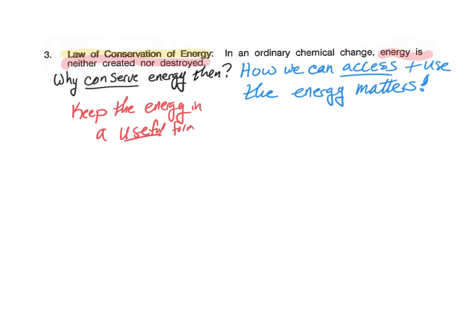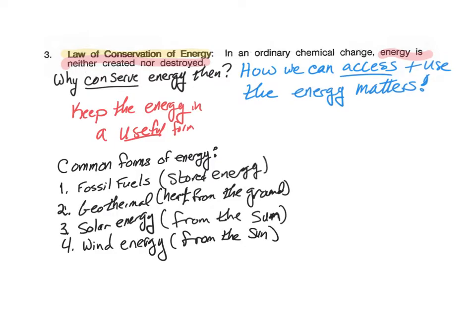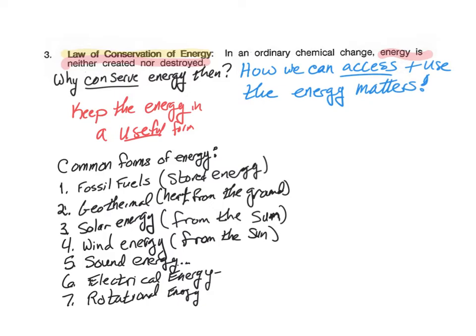What are some of the different types of forms of energy that you know about? Most people know about fossil fuels that run our cars. Those are a type of stored energy. There's geothermal energy. There's solar energy. There's wind energy. There's sound energy. Electrical energy. Rotational energy. There's all sorts of different types of energy.